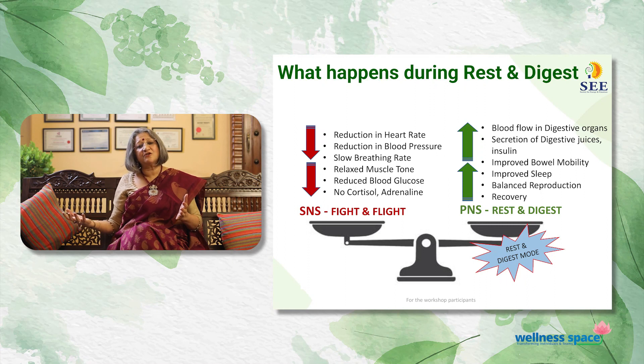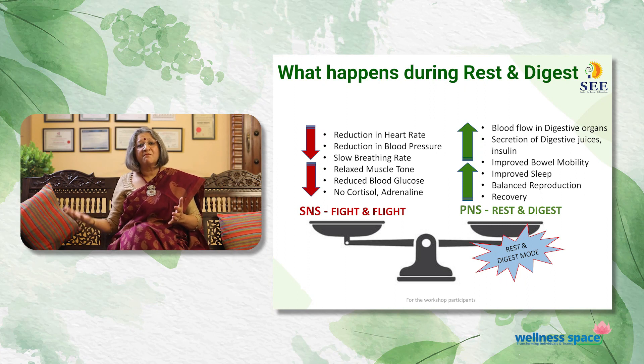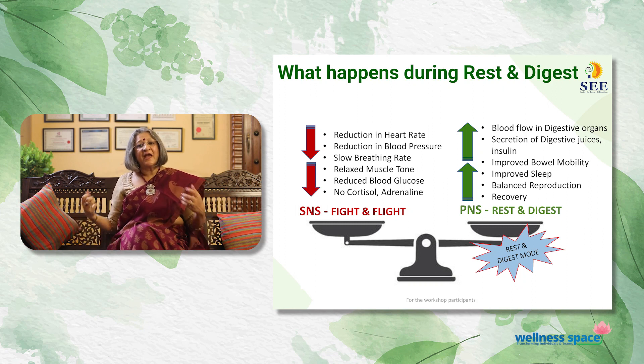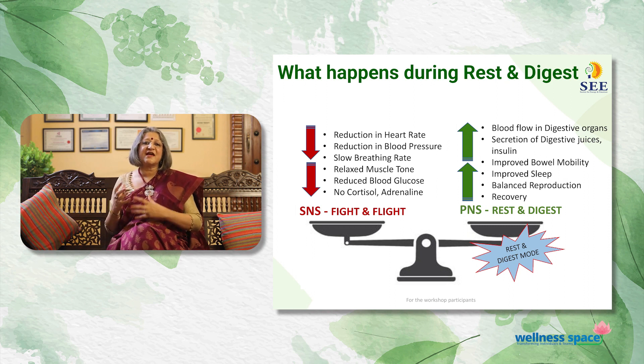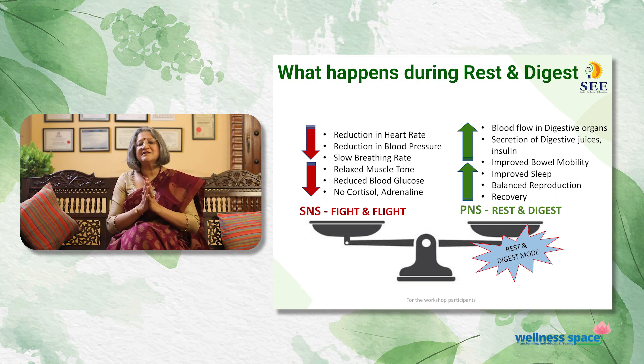When the body goes into fight-or-flight mode, a whole bunch of physiological activities happen, and after a while, once the danger is gone, the autonomic nervous system is supposed to automatically go into rest-and-digest mode, or parasympathetic activation. Parasympathetic activation is marked by a reduction in heart rate, slow breathing, a relaxed muscle tone, and a recharging of normal body functions — restarting digestion, secretion of hormonal juices, and hormonal balance.